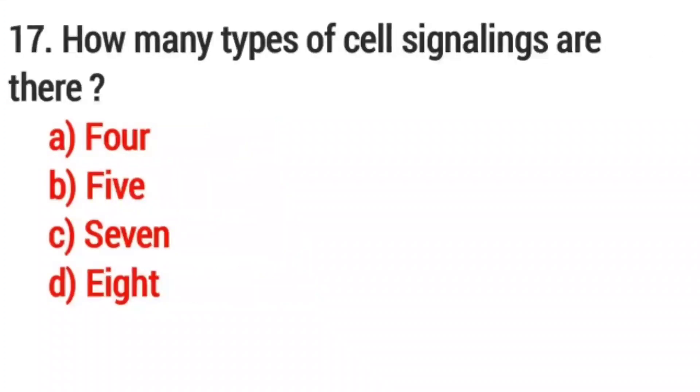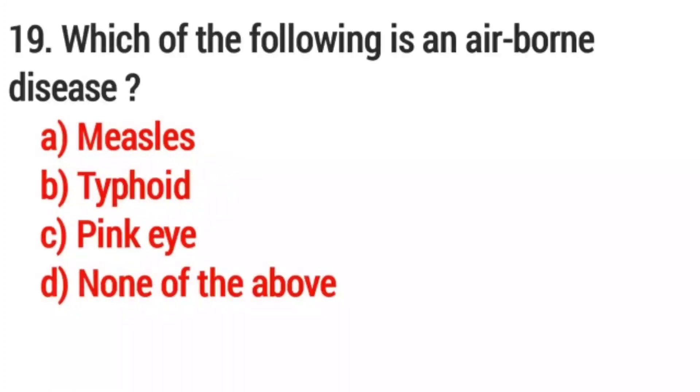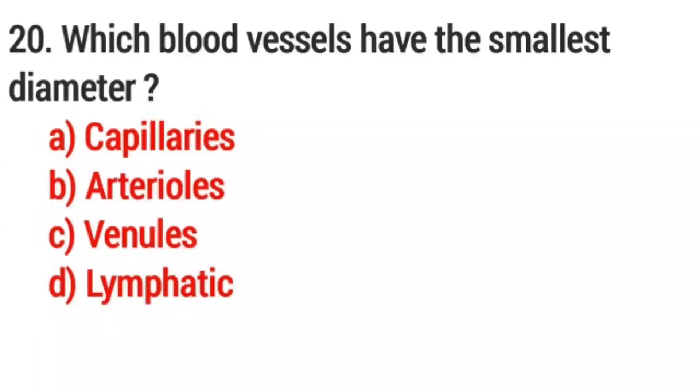Question number 17: How many types of cell signalings are there? Answer option 4. Question number 18: Which of the following hormones is a steroid? Answer option 4. Question number 19: Which of the following is an airborne disease? Answer option A. Question number 20: Which blood vessels have the smallest diameter? Answer option C.